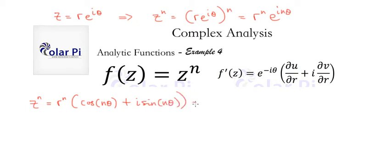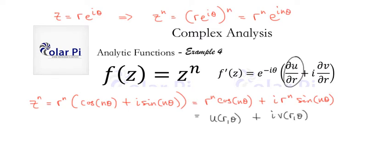And then distributing the r to the n, we can write furthermore that z to the n is r to the n cosine n theta plus i times r to the n sine n theta. And it suits us to look at this because now we see that we've written z to the n in the form u of r theta plus i times v of r theta. And that way, we can find the partial there and the partial there, which we'll need to do.